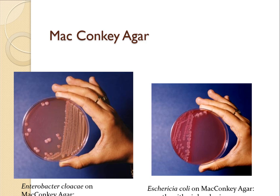MacConkey's agar is also differentiated for lactose-fermenting and non-lactose-fermenting bacteria. Coliform bacteria like E. coli can ferment lactose and secrete acid and gases, reducing the pH of the media below 6.8. Since MacConkey's media contains neutral red indicator, below pH 6.8 it shows a reddish or pinkish coloration — so lactose fermenters show pink colonies. Non-lactose-fermenting bacteria do not change the color of the medium and therefore show colorless colonies.